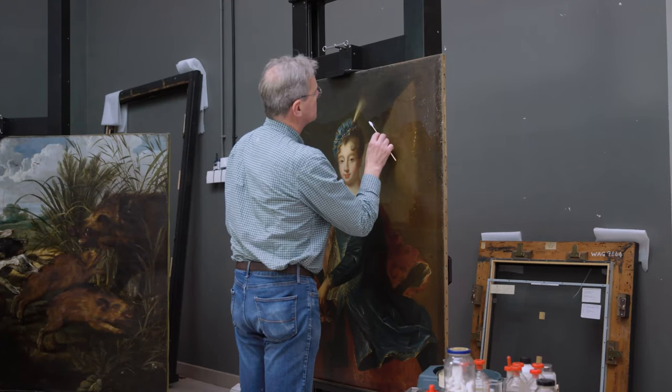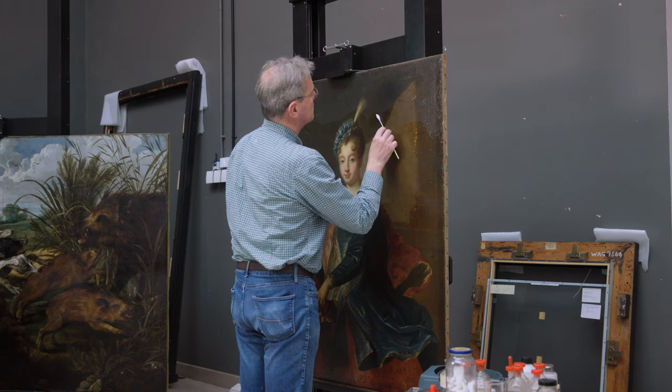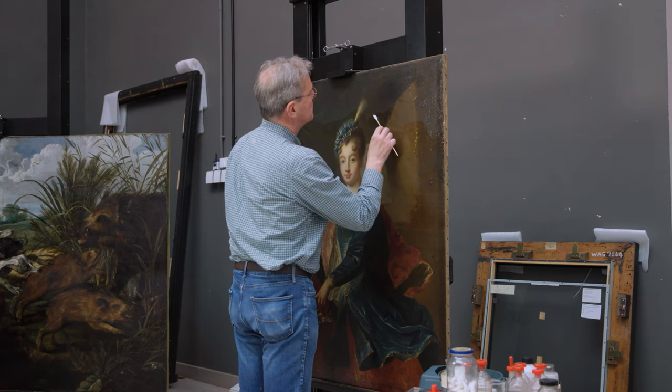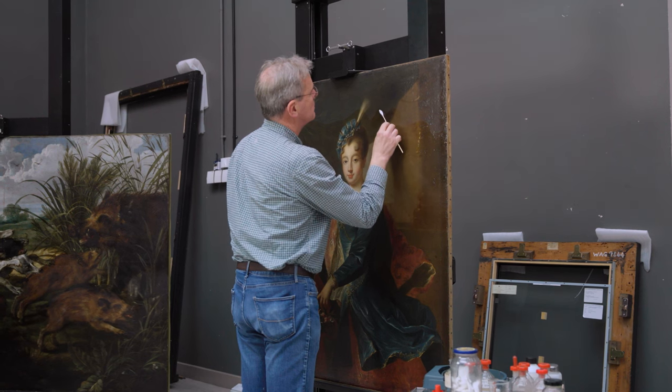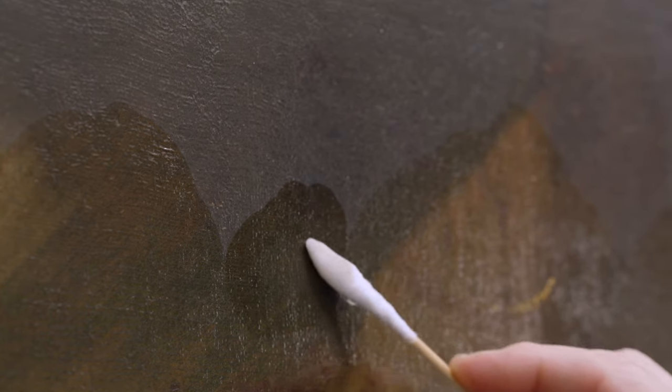Today we were looking at a painting by a French artist called Sonterre, and this was with a view to removing an awful lot of surface dirt from the picture, which we do with small cotton wool swabs.